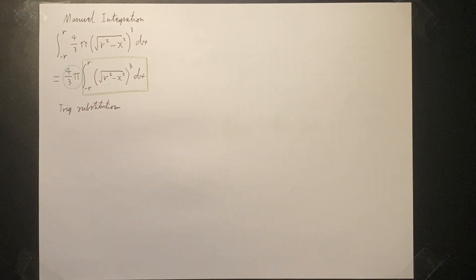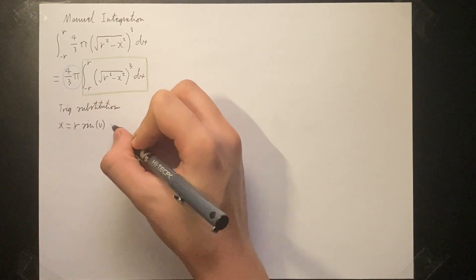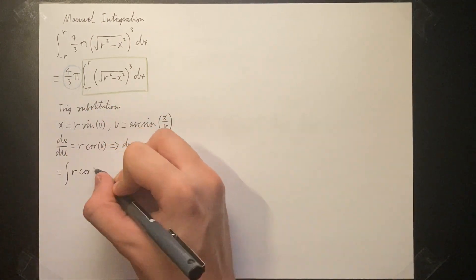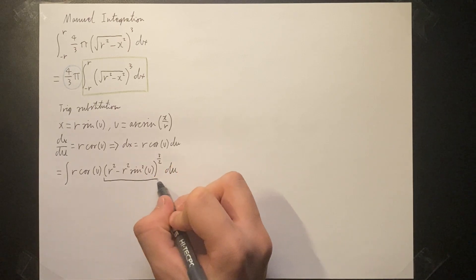We can apply a neat trigonometric substitution that is going to dramatically simplify the integral. We can let x be equal to r sine of u, therefore u is equal to arc sine of x over r and dx is equal to r cosine u du. Substituting x and dx, we get the following.